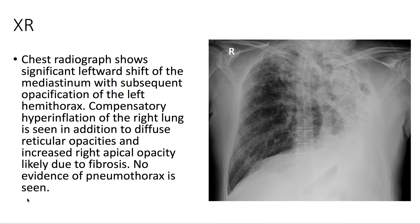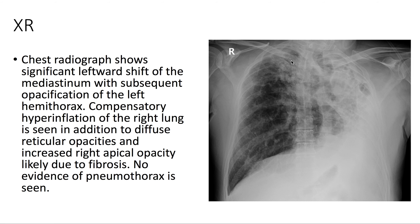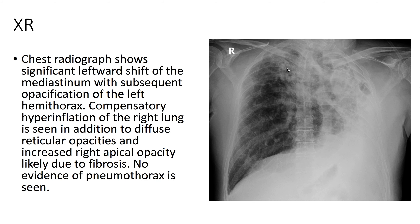On chest x-ray, we see significant leftward shift of the mediastinum with subsequent opacification of the left hemithorax. There's compensatory hyperinflation of the right lung, and we see diffuse reticular opacities, as well as a right apical opacity, likely due to fibrosis.